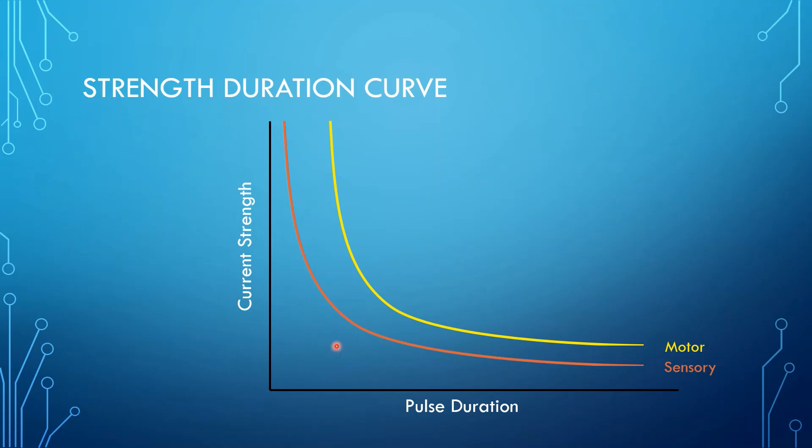As soon as you cross that sensory strength-duration curve, the client will feel something because you have depolarized some sensory nerves. Anything that has crossed that sensory curve will cause the client to feel something, typically a tingling or prickling. You could cross that curve by having a particular pulse duration and then increasing the current strength until right there, you've crossed the sensory nerve.